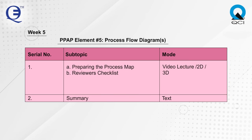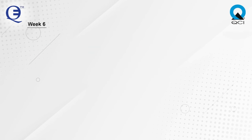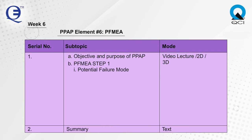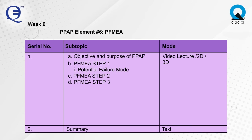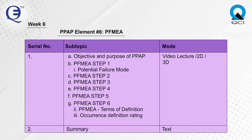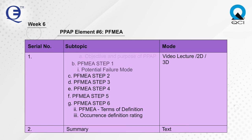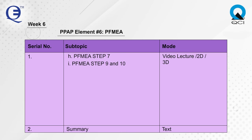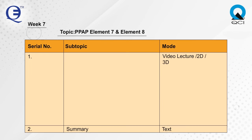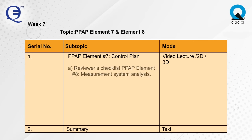Week 5 covers PPAP Element 5: Process Flow Diagrams, preparing the process map, and review checklist. Week 6 covers PPAP Element 6: PFMEA, objective and purpose, PFMEA Steps 1 through 7, Steps 9 and 10, terms of definition, occurrence definition rating, and a summary of steps to complete a PFMEA.